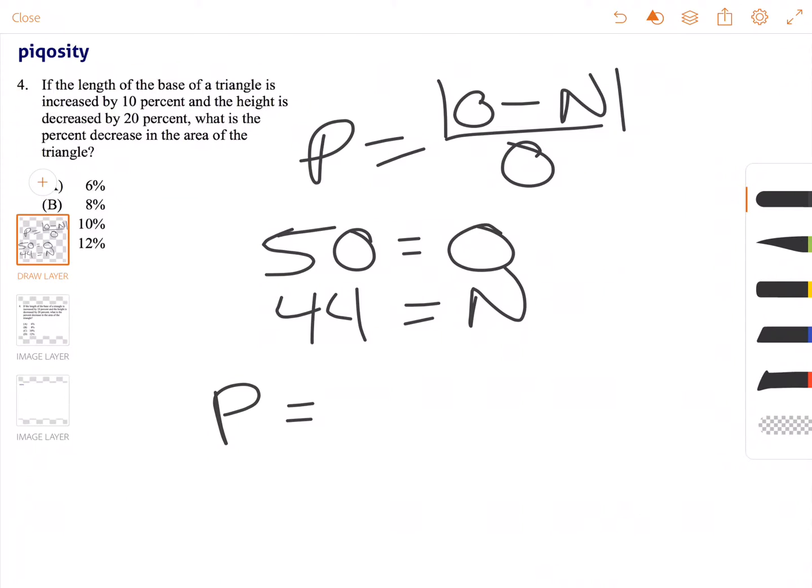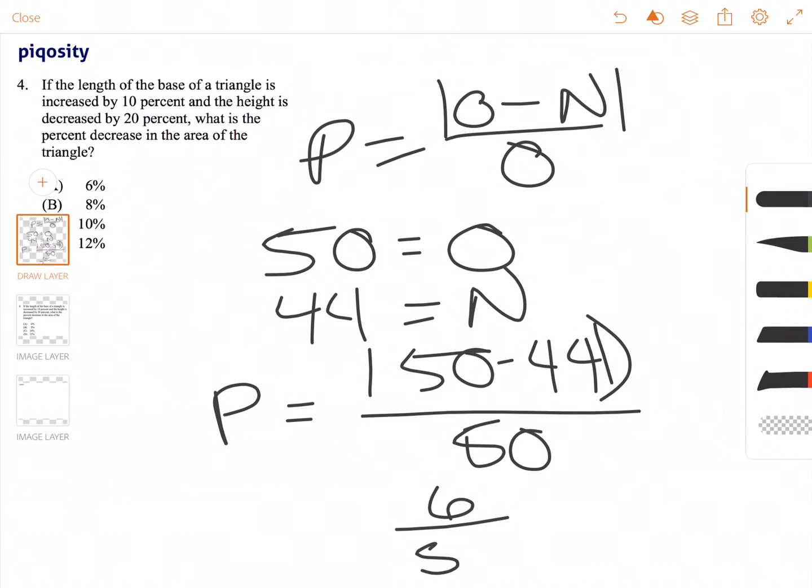So our percent of change is equal to 50 minus 44, or the absolute value of that, divided by 50. So 50 minus 44 is 6, and our original is 50.